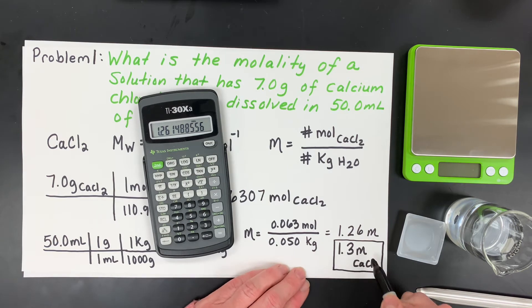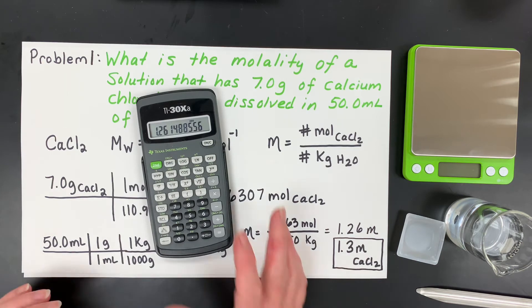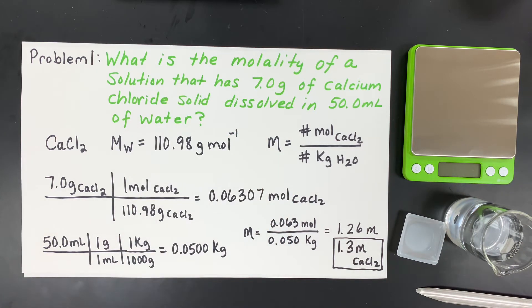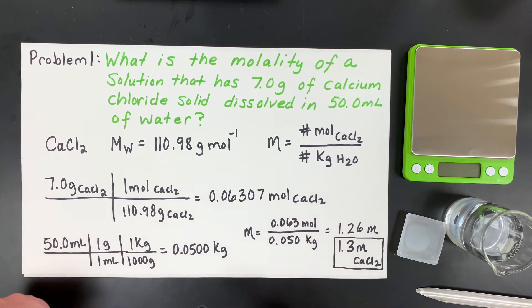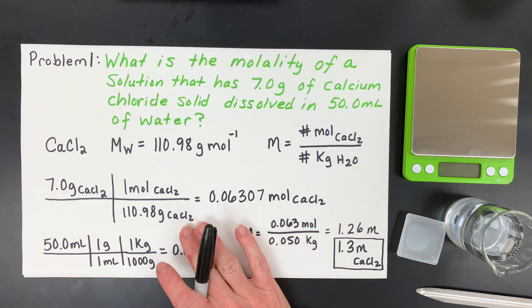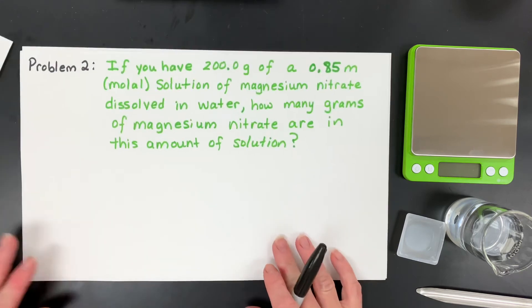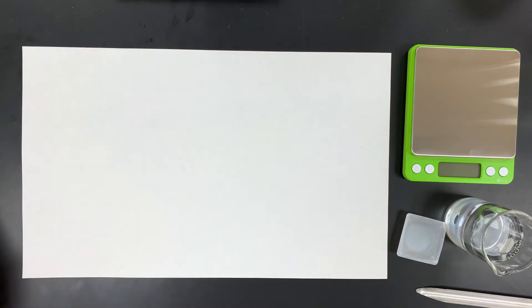Or we'd say it's a 1.3 molal solution of calcium chloride. So before I do the next practice problem, I'm just going to make this solution so you can sort of see how it happens, and a little bit about this density fact. So here's the next problem, that'll be at the end of the video. But I'm going to make this solution before I even get to that problem.